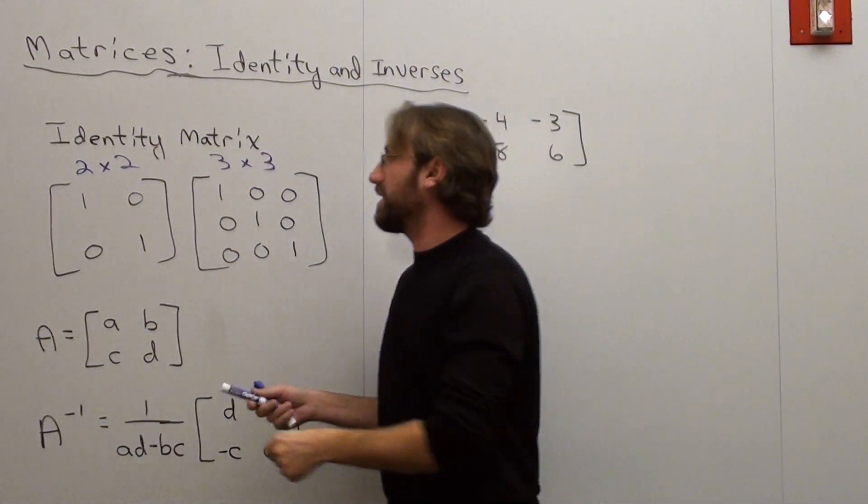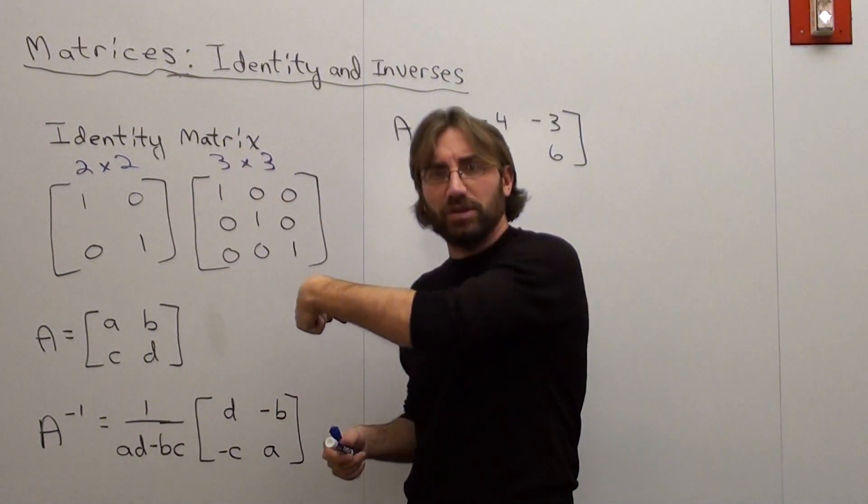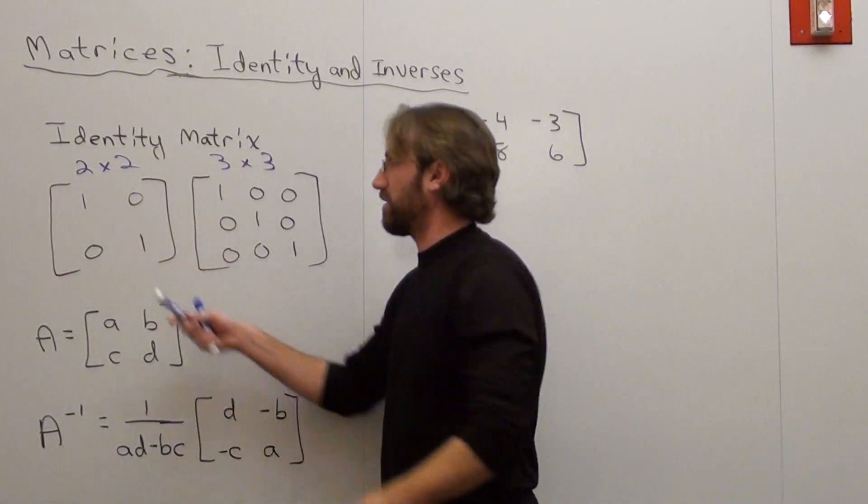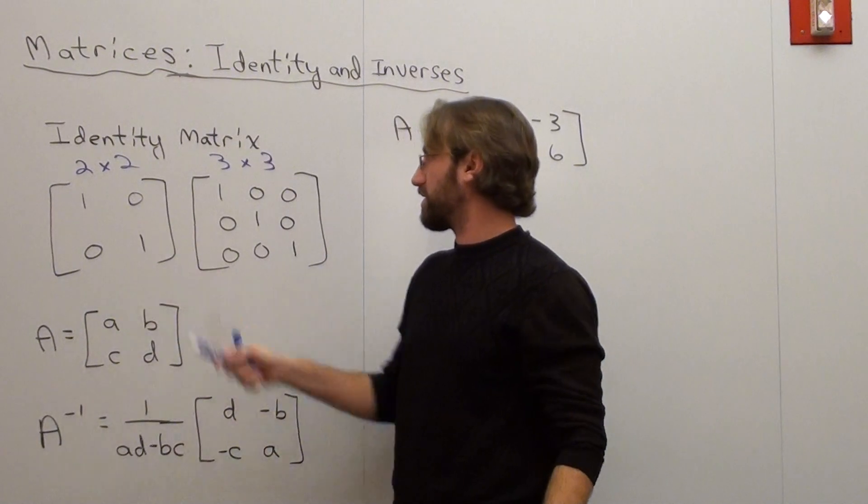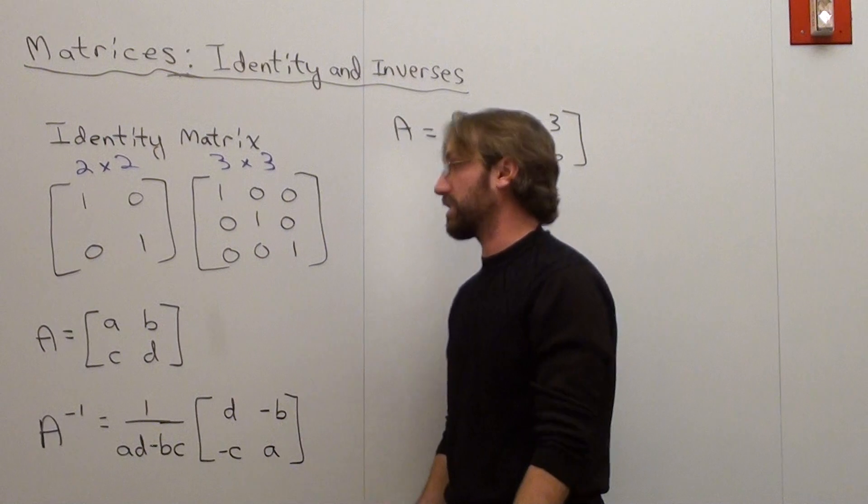All it basically means is that you have a 1 that goes diagonal all the way, it just keeps going diagonal from left to right, and everything else is a 0. So 1, 1, everything else is a 0. Here, 1, 1, 1, everything else has to be a 0. That's an identity matrix.